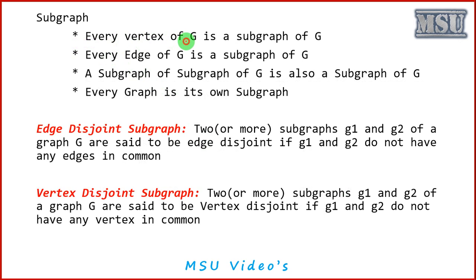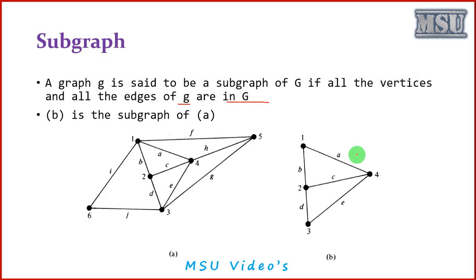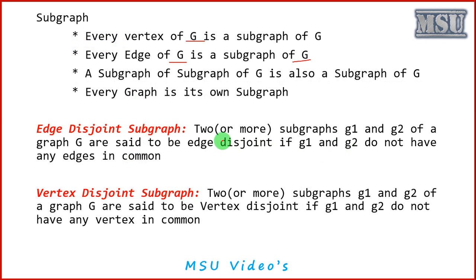For subgraph: every vertex of g is a subgraph of G. Every vertex can be considered as a subgraph, and similarly every edge of g is also called a subgraph of G. A subgraph of a subgraph of g is also called a subgraph of g — so a subgraph can be defined recursively. Also, every graph is its own subgraph, so you can consider the whole graph as a subgraph.